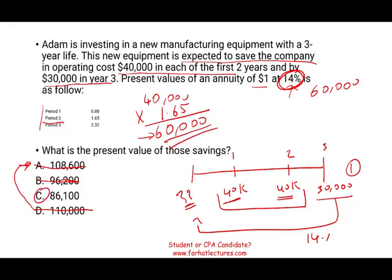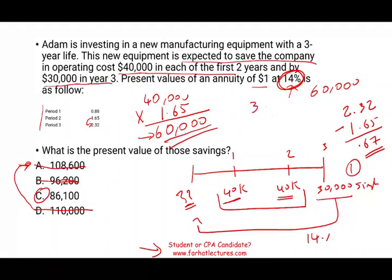To prove it: I can derive the single-payment discount factor for year three from the annuity table. Taking the three-period annuity factor of 2.32 minus the two-period factor of 1.65 gives a difference of 0.67 — that's the single-payment factor for year three. Multiplying 30,000 by 0.67 gives approximately $20,100. Adding $20,100 to $60,000 gives $86,100, confirming the answer is C, approximately $86,000.